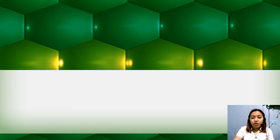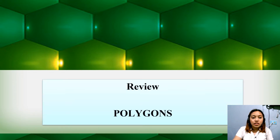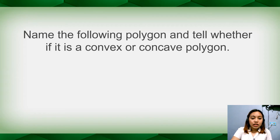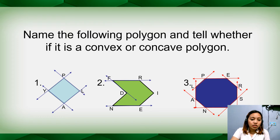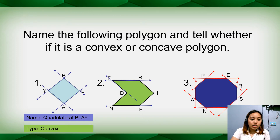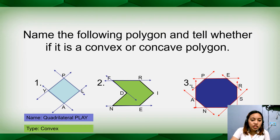Good morning. Let us first have a review about our topic last time, which is polygons. Name the following polygon and tell whether it is a convex or concave polygon. So let us have three items for this. For number one, you are just going to count the number of angles or sides: one, two, three, four. This is a four-sided polygon, so the name is quadrilateral PLAY. The type of this quadrilateral is convex because if we extend the sides of this polygon, it will not pass through the points inside the polygon.